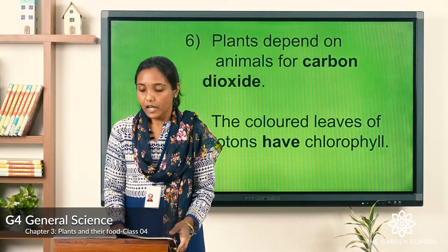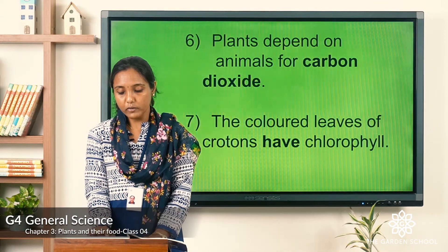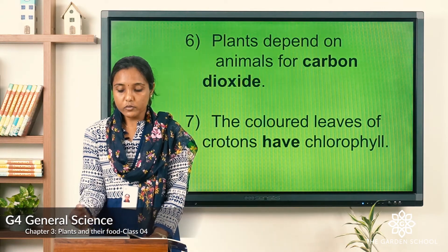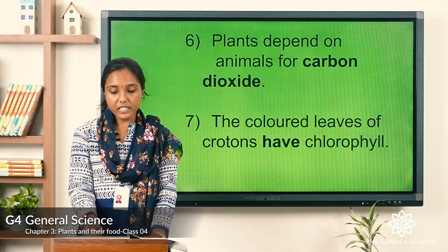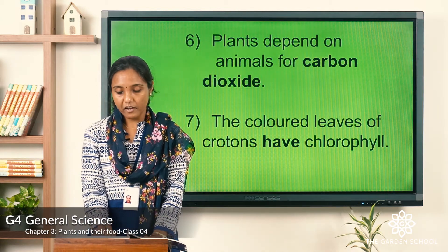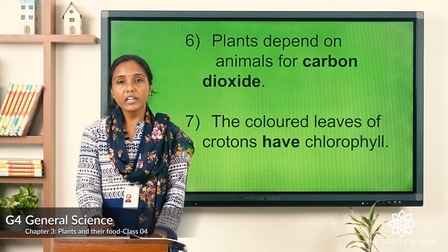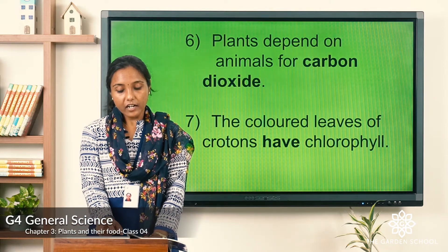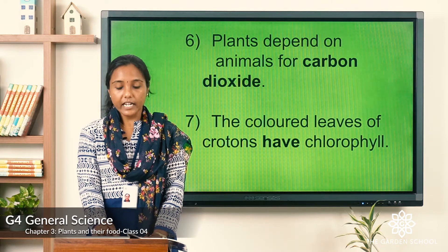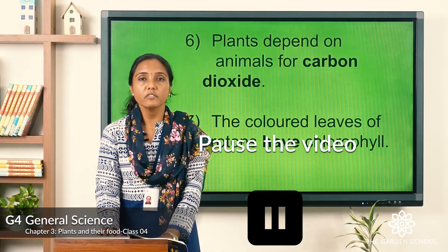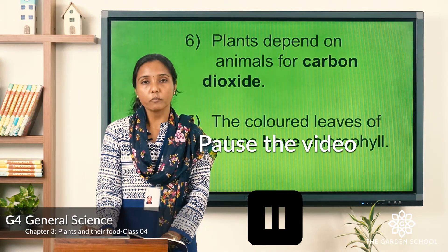Now let's see exercise three: group the following foods we eat according to their edible plant parts. Options are given, and we have to write each under the correct column. Children, you can pause the video and try filling in the columns with the correct options.